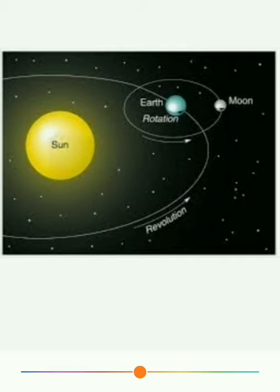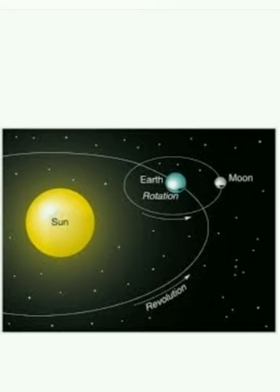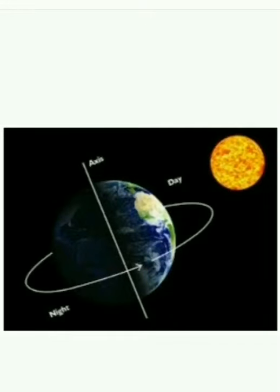The Earth continues to rotate on its axis while it is revolving around the Sun. See students, in this picture we can see the rotation of Earth. From which direction does Earth start rotating? Earth starts rotating from west to east.